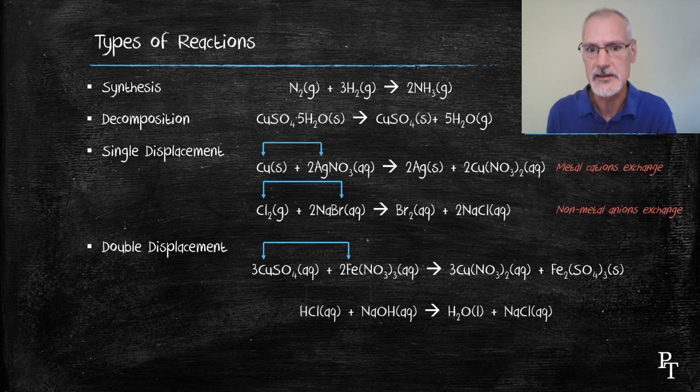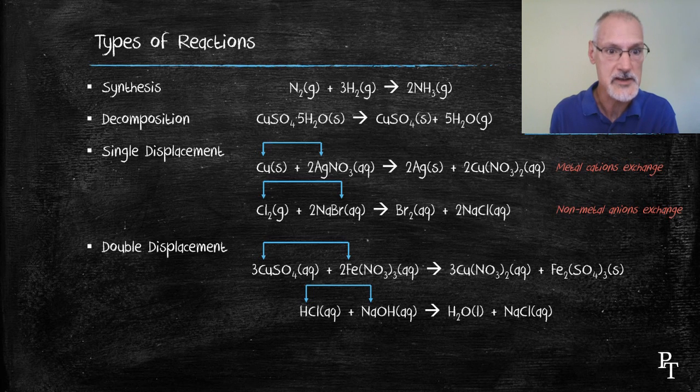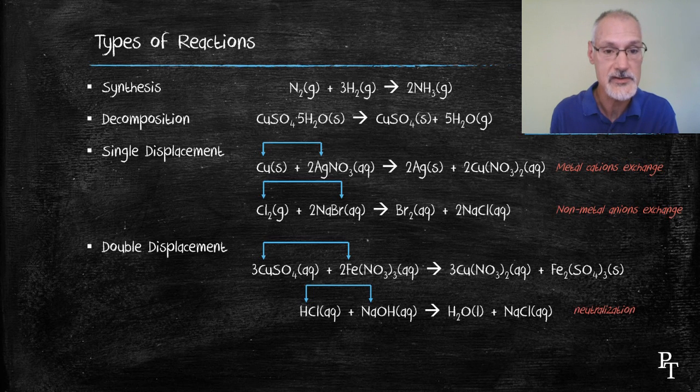There is one special case I'd like to mention of a double displacement reaction involving acids and bases. In these cases, the hydrogen that's present in the acid will exchange places with, often, the metal. When that happens, you end up producing HOH, or water, and a salt. These are called neutralization reactions, and they're a special class of double displacement reactions.